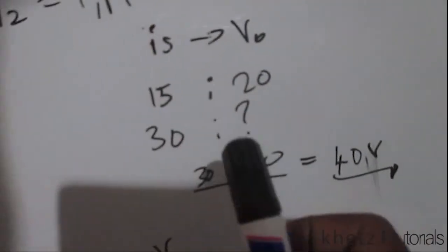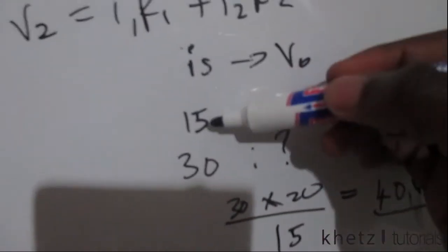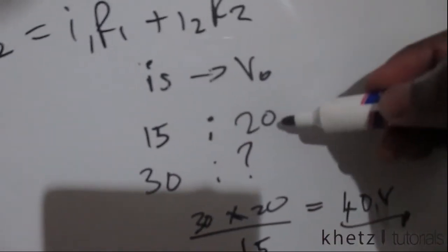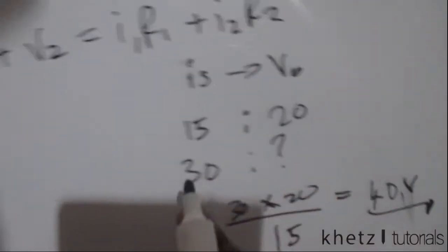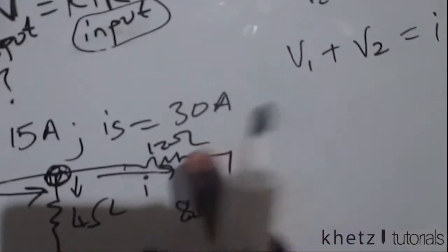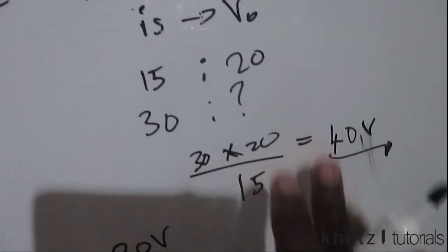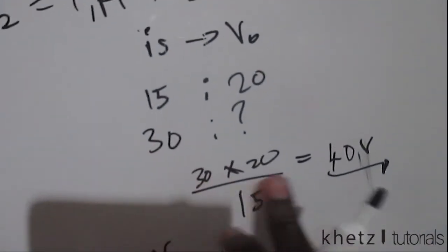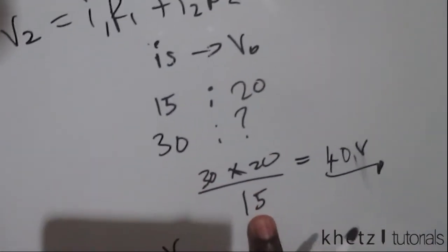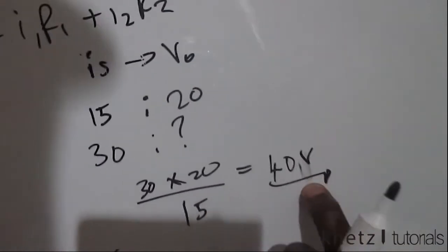So we form a ratio saying that when IS was 15 amperes, we found VO to be 20 volts. So the next question asks, what is VO when IS is 30 amperes? So now that we have 30 amperes, what is VO? From that you can just do our proportion, saying 30 multiplied by 20 divided by 15, and that gives you 40 volts.